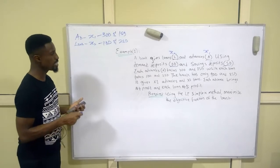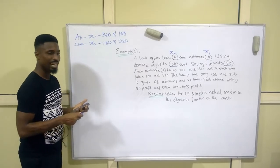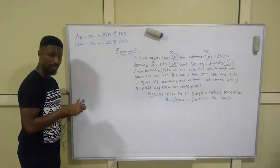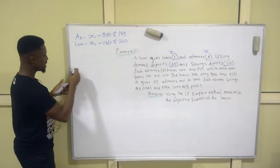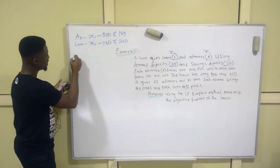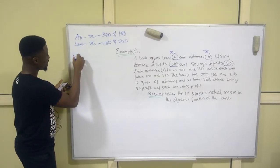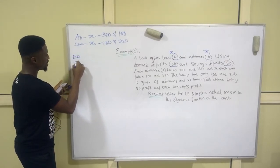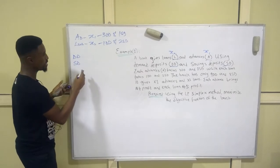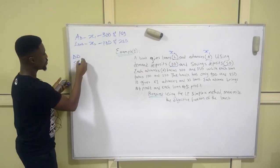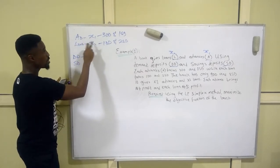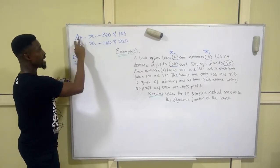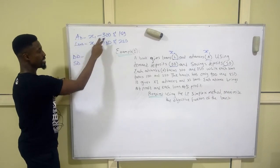If we put this in arithmetic format, we'll have the DD (demand deposit) and SD (savings deposit) constraint equations. For the DD constraint, we look at how many DD each variable contributes — for advances (x1), that's three.